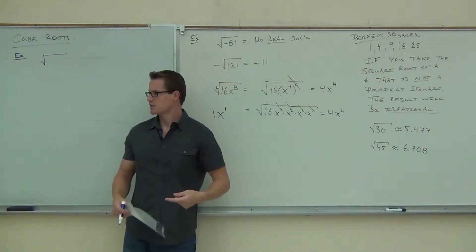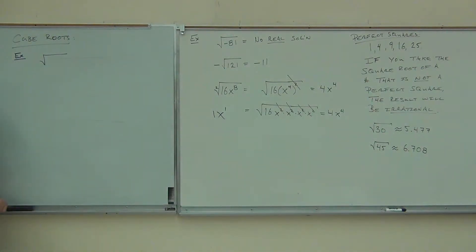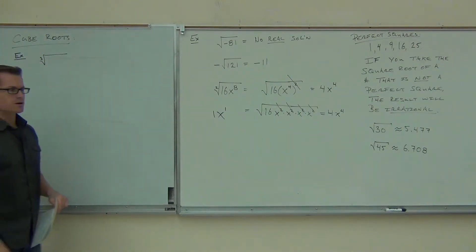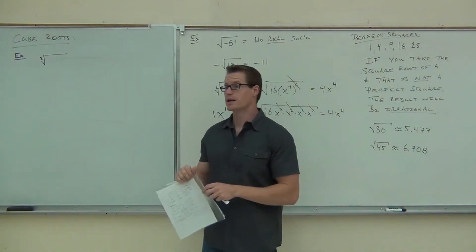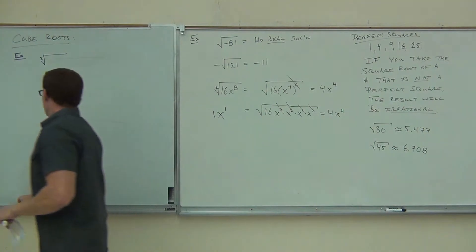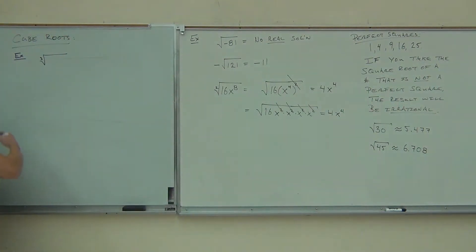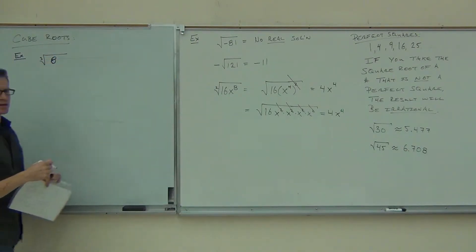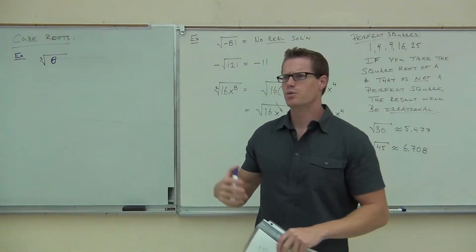So that right there is a square root, because there's no number written — it's implied that it's a 2. If I want to show a different type of root, I just put a different number there. So if I put a 3, that's a third root, or a cube root — same thing. Think about what a third root would mean.